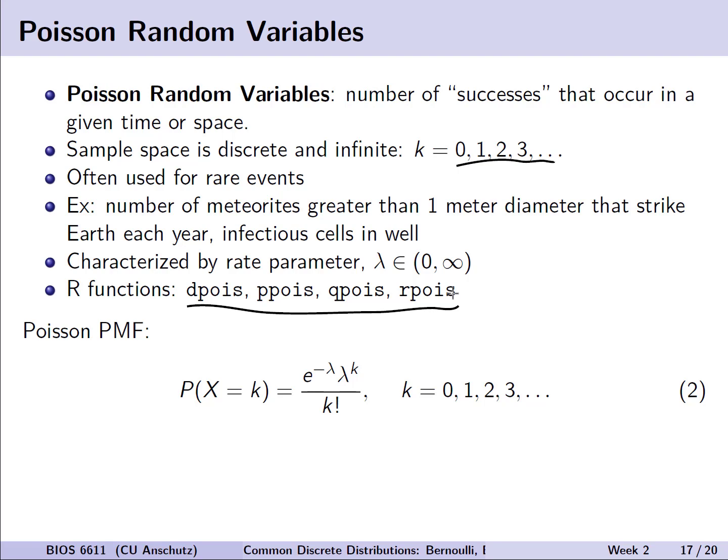The probability mass function, if we wanted to do it by hand, for the Poisson distribution is written here, where the probability of observing k successes in a given amount of time or space is represented by e to the negative lambda times lambda raised to the k divided by k factorial.